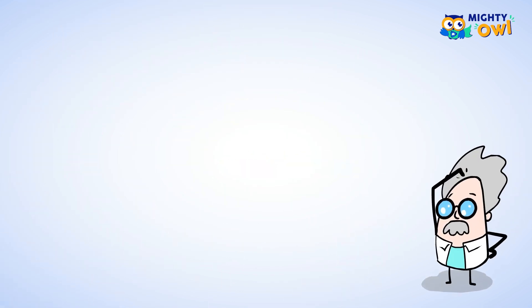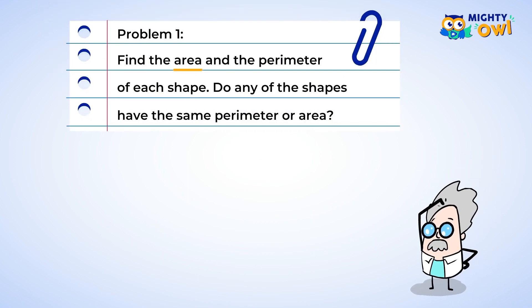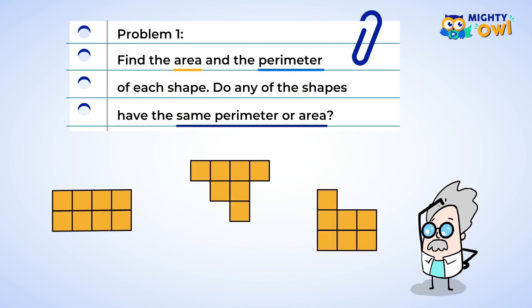Let's find the area and perimeter of other shapes and explore this even more. Find the area and perimeter of each shape. Do any of the shapes have the same perimeter or area? We can start by finding the area of each of these shapes, and we do that by counting the unit squares. The first shape has an area of eight square units. The next shape has an area of seven square units. The final shape also has an area of seven square units.